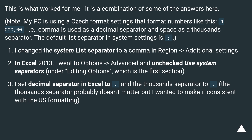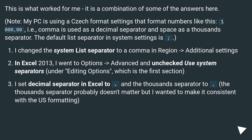In Excel 2013, go to Options > Advanced and uncheck 'Use system separators' under Editing Options, which is the first section. Then set the decimal separator to dot. The thousands separator probably doesn't matter, but setting it to be consistent with US formatting is recommended.